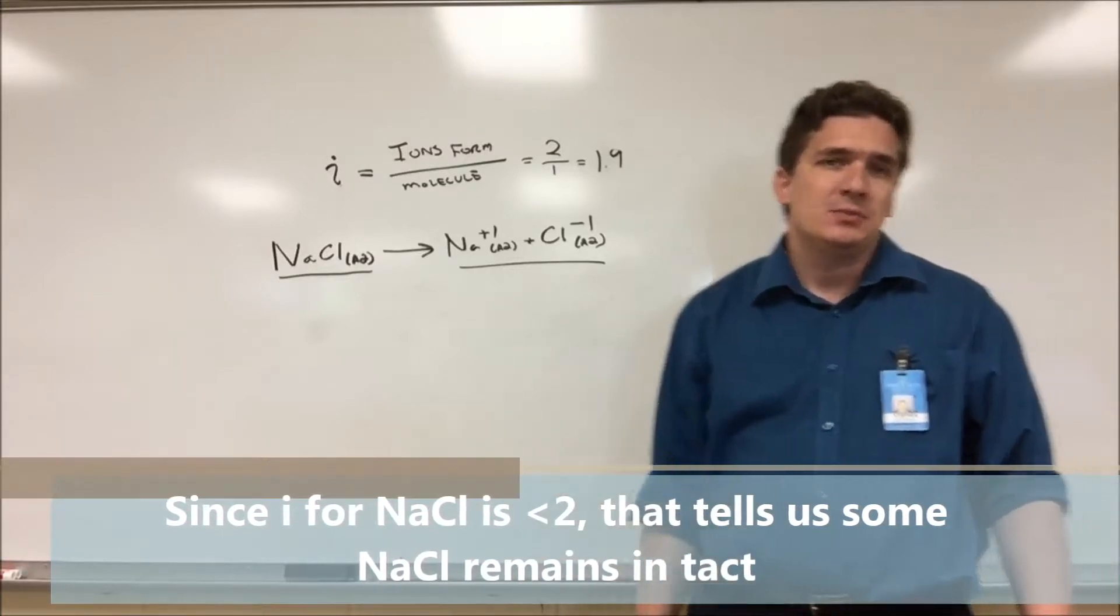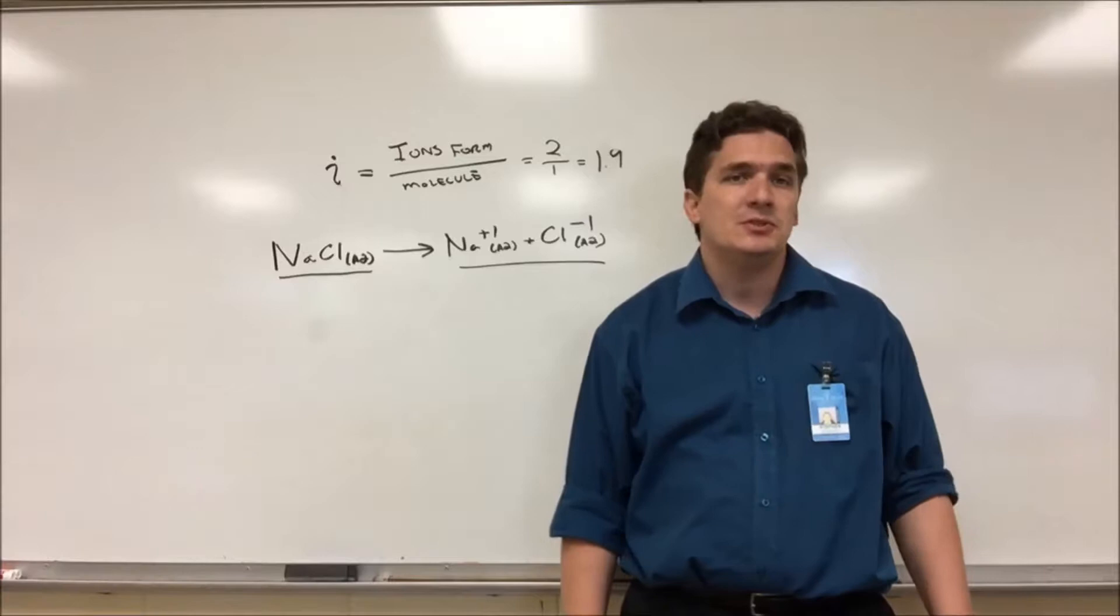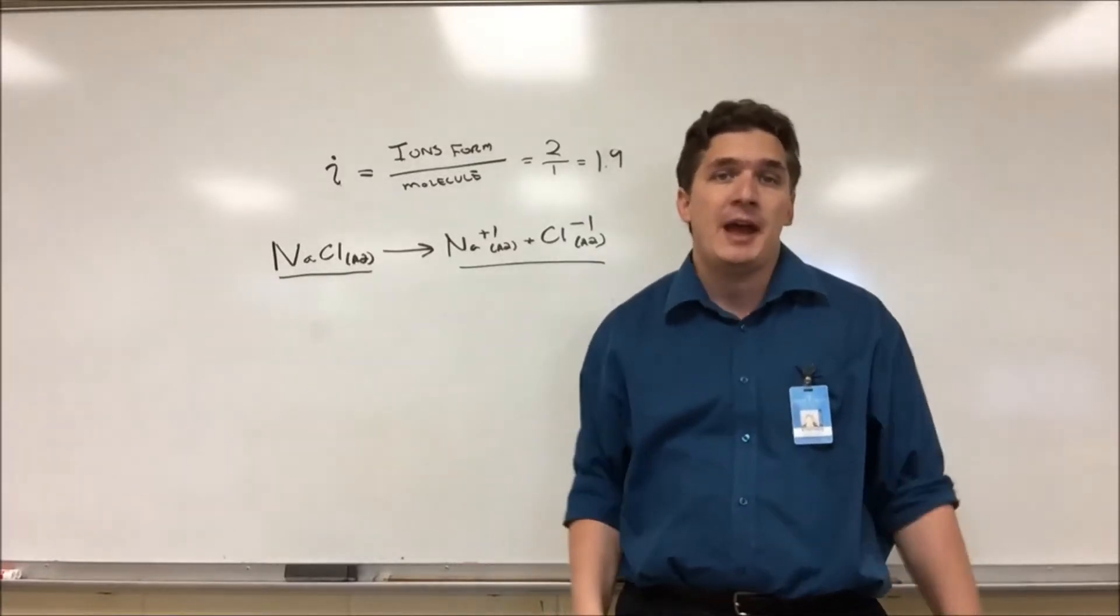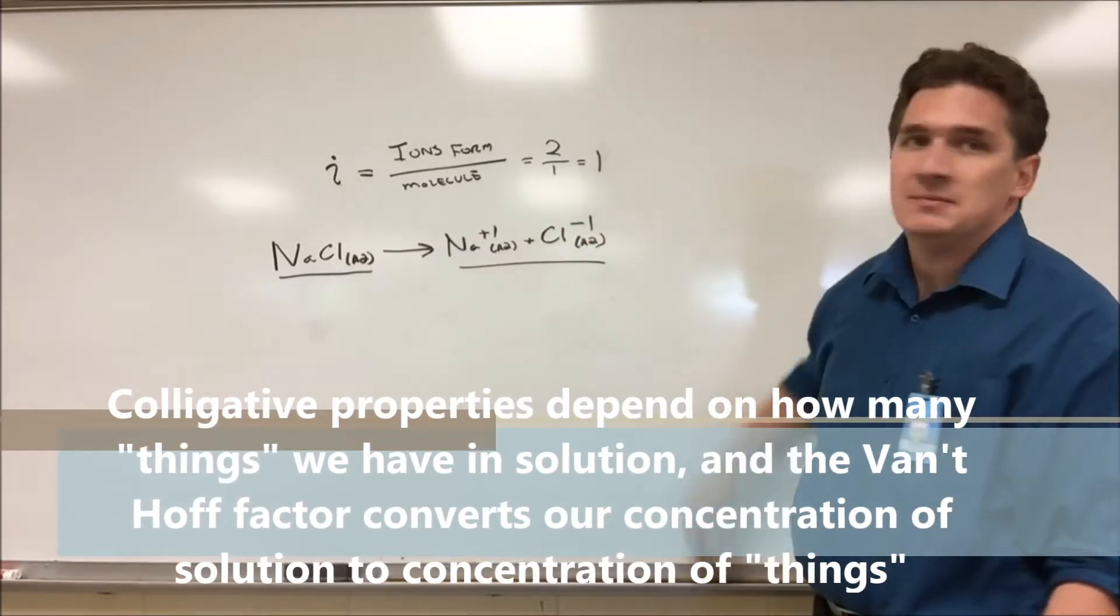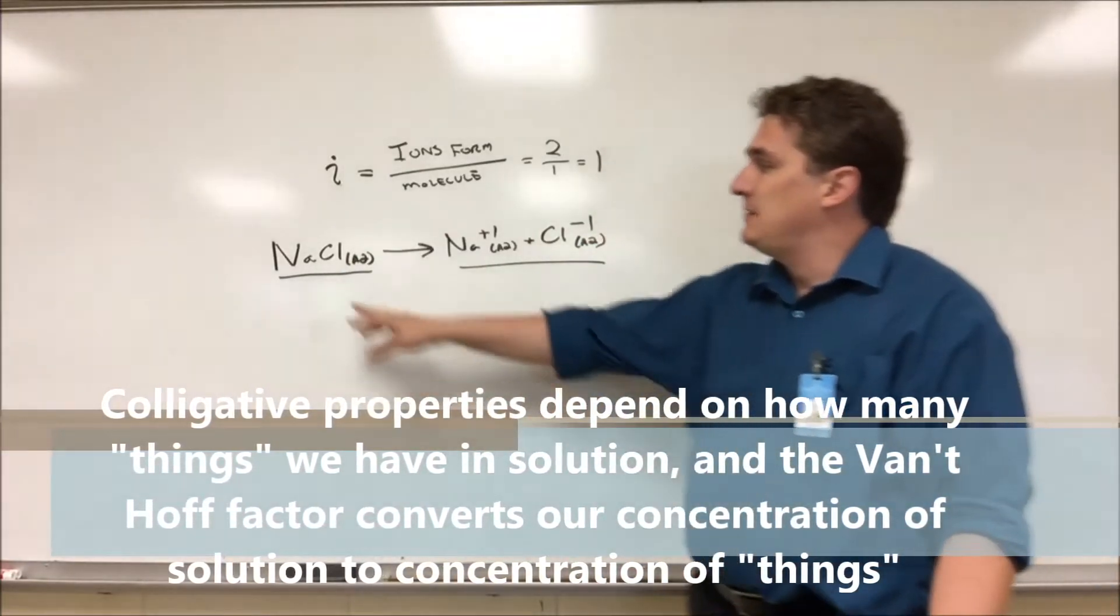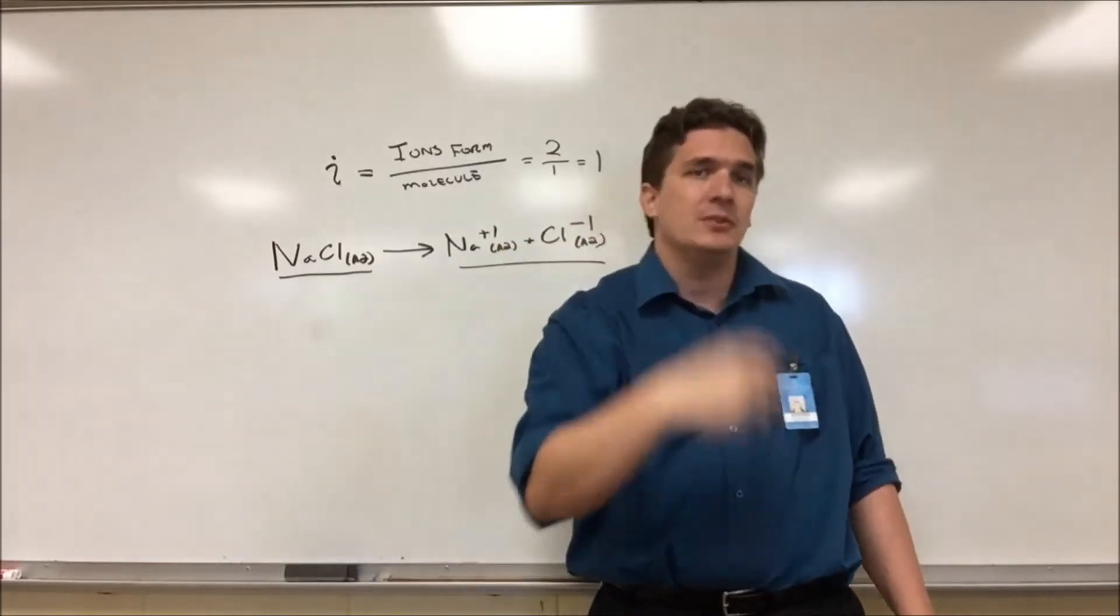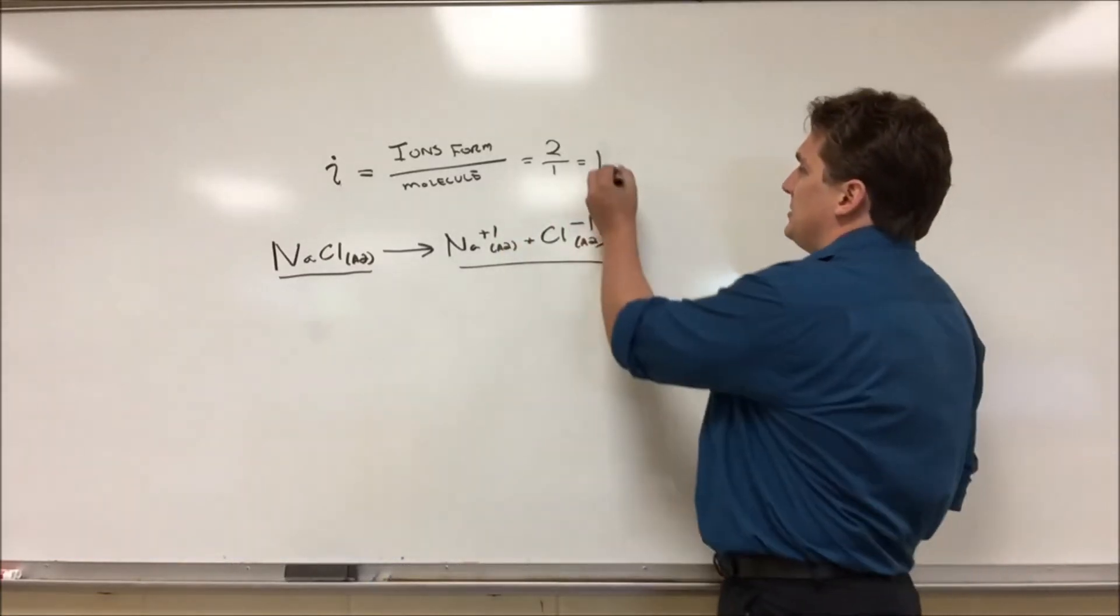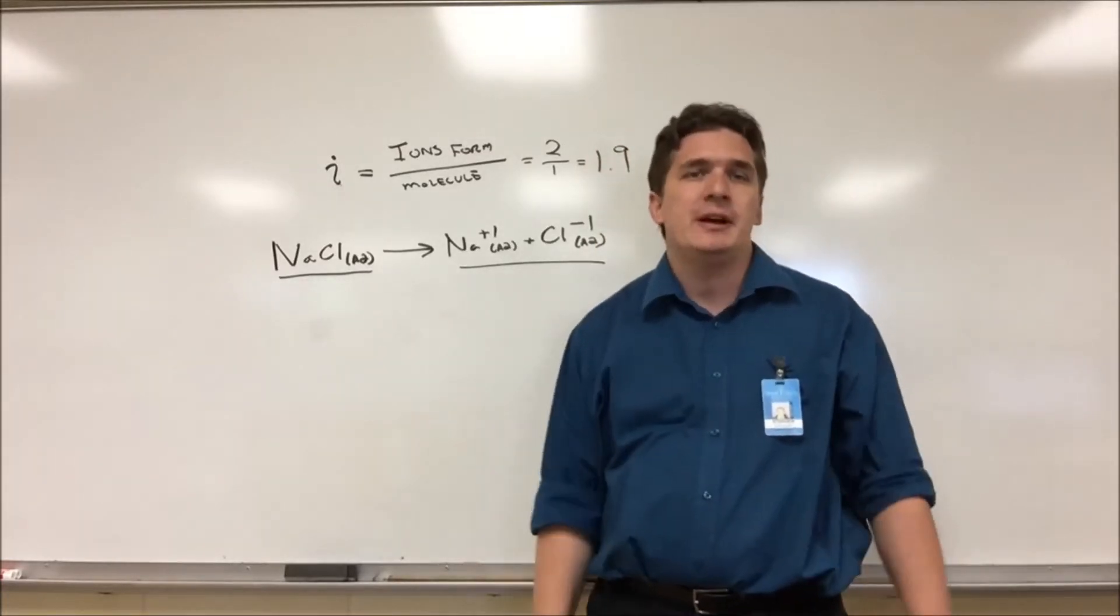So why do we need to know this? Colligative properties depend on the number of ions we form in solution, the number of particulates we have. So if we take sodium chloride, let's say for example the Van't Hoff factor ends up being one. This tells us that for every molecule of NaCl we throw in there, we have one molecule floating in solution. But if the Van't Hoff factor is 1.9, it tells us that for every one we throw in, we actually get roughly two ions that form.